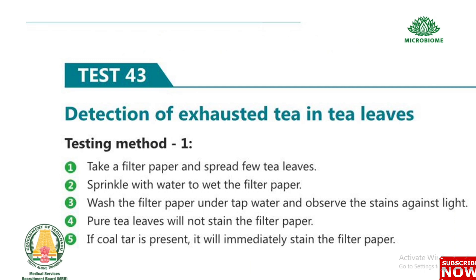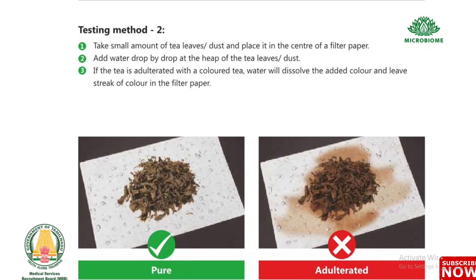Test 43: Detection of exhausted tea in tea leaves. Method 1: Take a filter paper, spread a few tea leaves, sprinkle with water to wet the paper. Wash under tap water and observe the stains against light. Pure tea leaves will not stain the filter paper. If coal tar color is present, it will immediately stain the paper. Method 2: Place tea leaves dust in the center of a filter paper and add water drop by drop. If adulterated with colored tea, water will dissolve the added color and leave a streak of color on the filter paper.